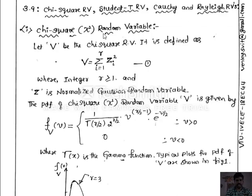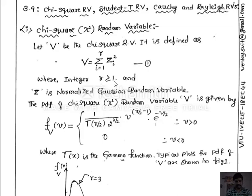Let us consider the first one: the chi-square random variable. In order to define a chi-square random variable, we need n independent normalized Gaussian random variables z1, z2, up to z_R, where R is the order of the chi-square random variable. Then we can define the chi-square random variable V as V equal to the summation from i equal to 1 to R of z_i squared, where R represents the order. This is the standard equation of the chi-square random variable of any order R. Therefore, the chi-square random variable is the sum of squares of independent normalized Gaussian random variables.